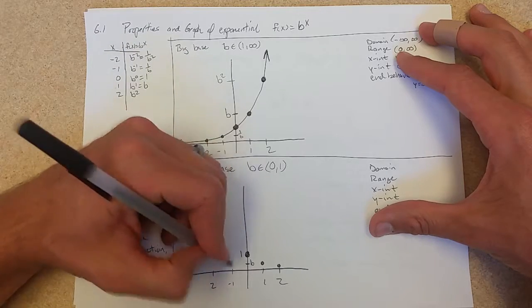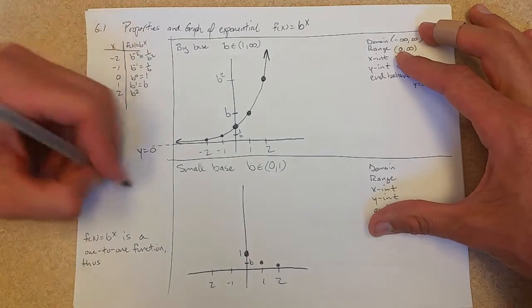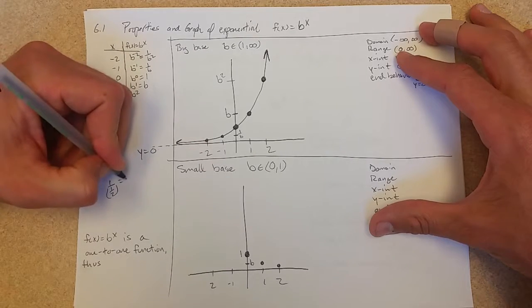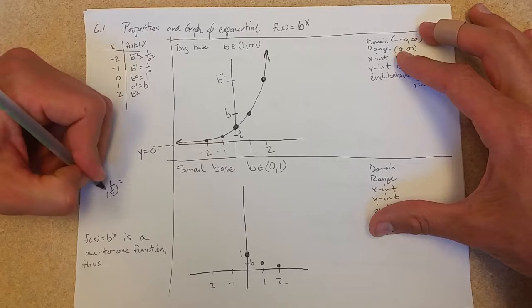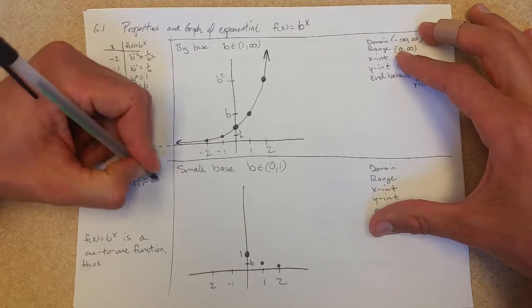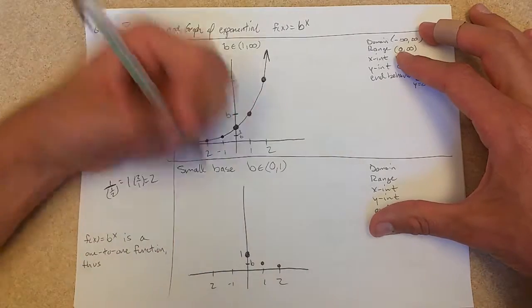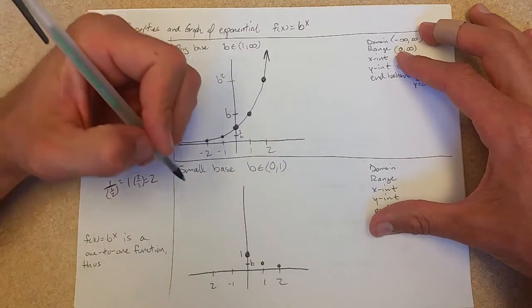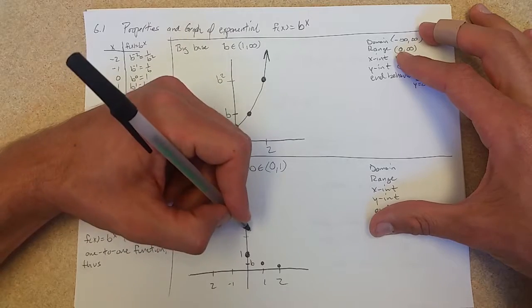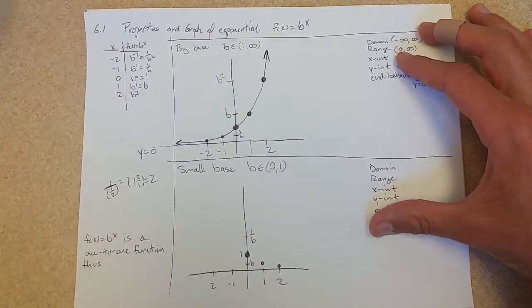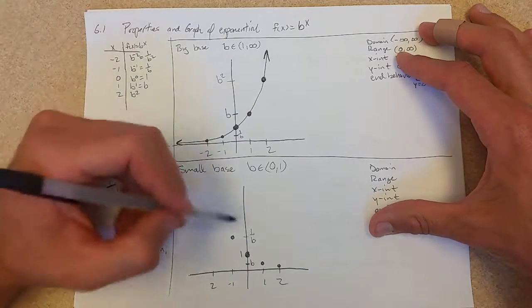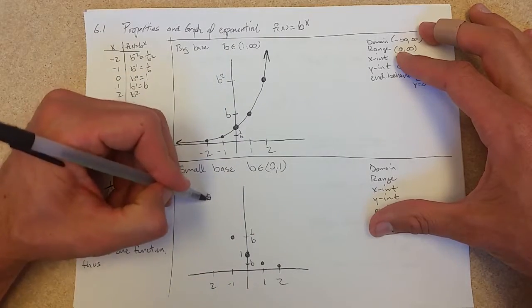Negative 1 will be 1 over b, 1 over a half. And with multi-story fractions, you want to multiply by the reciprocal, and then you get 2. So you're going to get something close to 2 here. And 1 over b squared is going to be close to 4, that'll be up here.